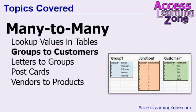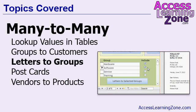We'll learn the right way to set up many-to-many relationships with a couple of different examples. We'll start by creating a relationship between groups and customers. Multiple customers can be in a group, and multiple groups can belong to a single customer. We'll learn about something called a junction table, which bridges the gap between two other tables. We'll build a series of forms so you can see each of your customers and what groups they belong to, and each of your groups and which customers are in that group. We'll then make a letter that you can send out by selecting multiple groups, so you can send the letter to everyone in your hardware, software, and training groups.